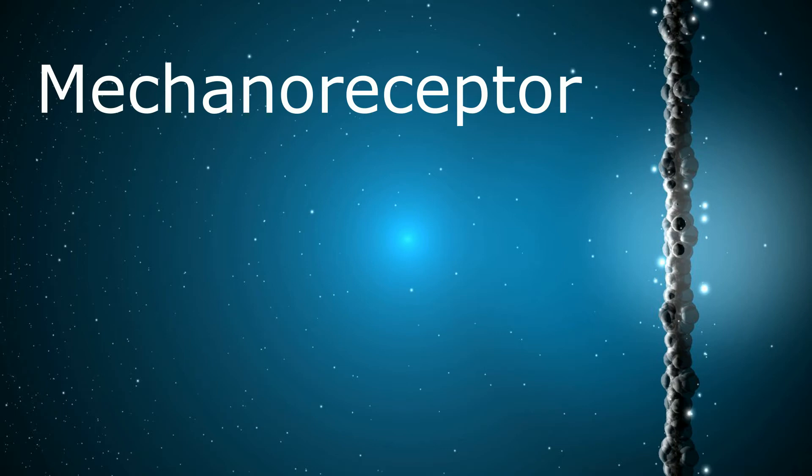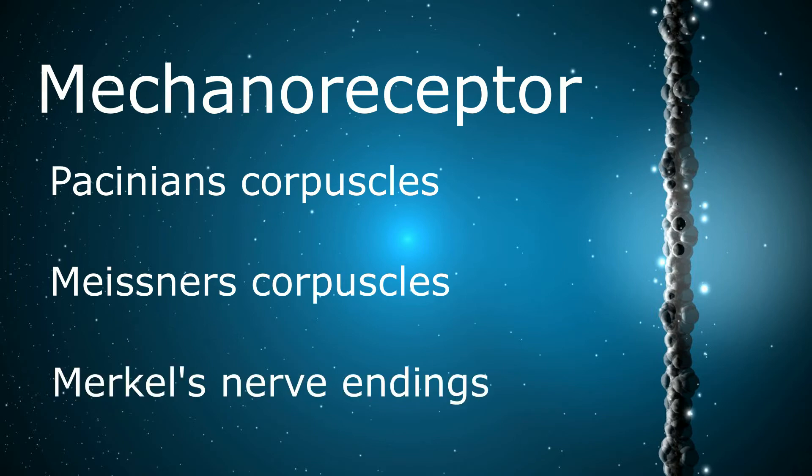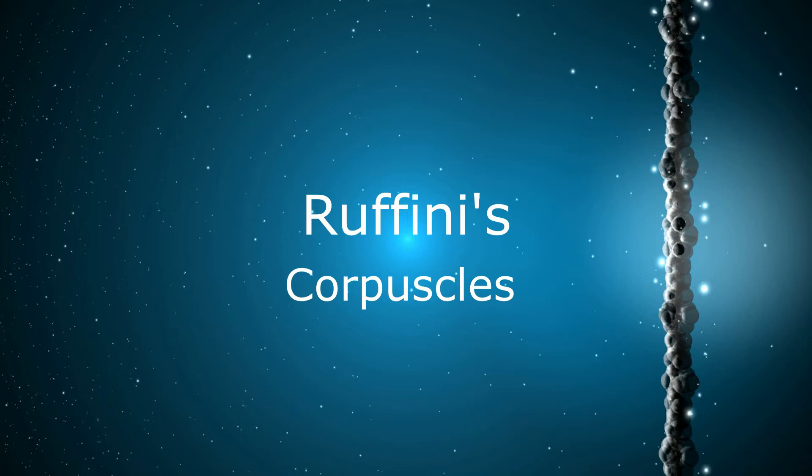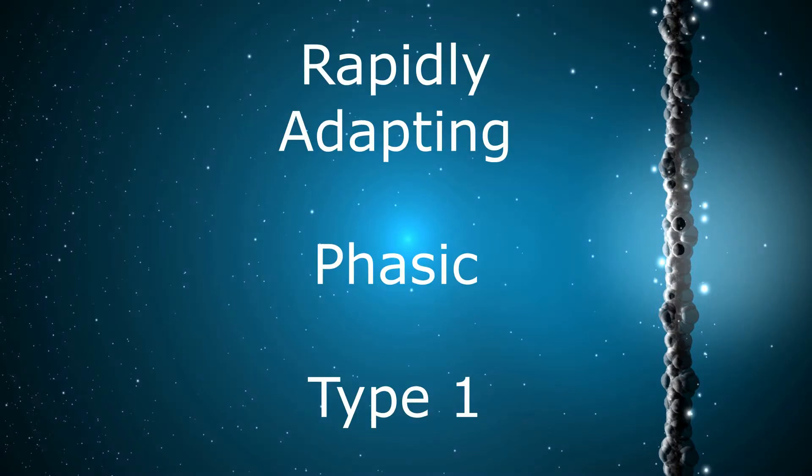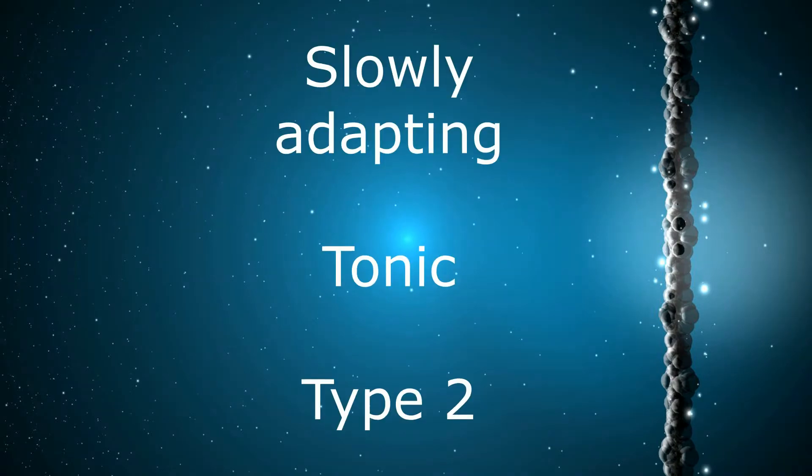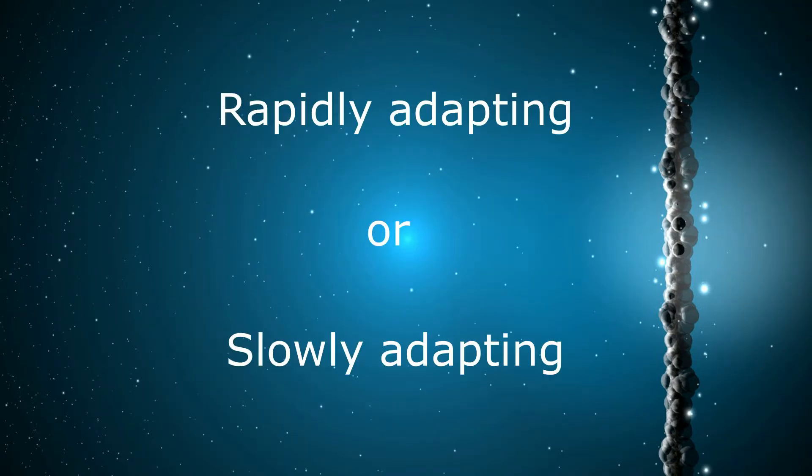But what is a mechanoreceptor? Well, there are four main kinds of mechanoreceptors in mammals. There's Pacinian corpuscles, Meissner's corpuscles, and Merkel's nerve endings. And then, of course, we have Ruffini's corpuscles. These are then further divided into two more types. They have a few names. As it's the most descriptive, I'm going to use the terms rapidly or slowly adapting, just to keep things simple.